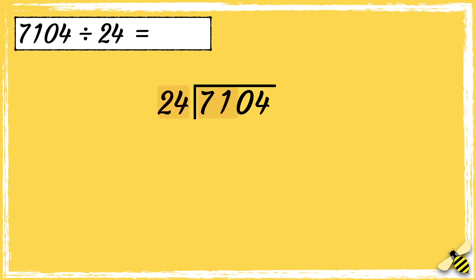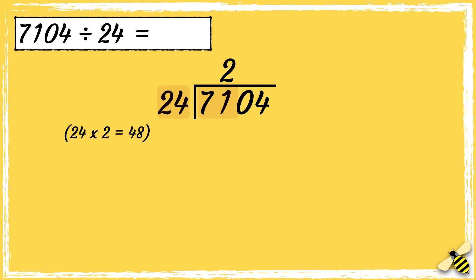24 times 2 is 48, and 24 times 3 is 72, so I can see that 24 goes into 71 two times. Now we need to find out what's left over: 71 take away 48 equals 23.